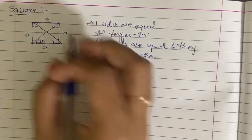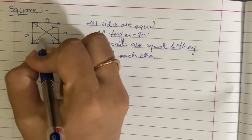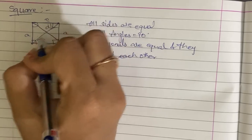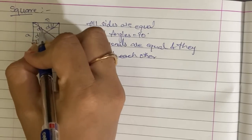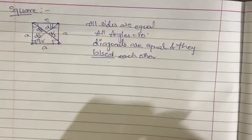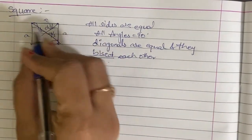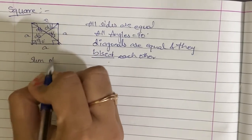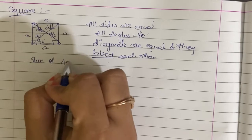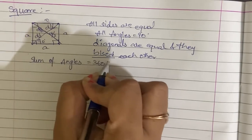Bisect means that it is exactly half divided. This is d by 2 on each side of the diagonal. Sum of angles will be equal to 360 degrees.